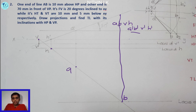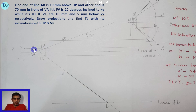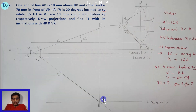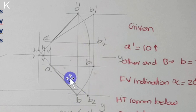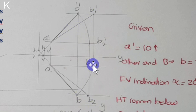Using the rotating line or rotating plane method to find true inclination. Steps: locate A-dash, H-dash, V-dash; check the VH line. Rotate A-dash V-dash parallel to XY to get B2-dash; the locus gives B2 for true length and inclination with HP. Similarly, rotate A-dash B1-dash to find true length and inclination with VP. Rotate to get B1 and B1-dash.